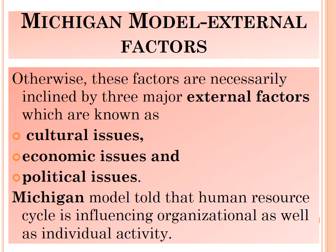The Michigan model is necessarily influenced by three major external factors: cultural issues, economic issues, and political issues. Any organization must be dependent on the culture, economy, and political issues of its context. The Michigan model states that the human resource cycle influences both organizational and individual activity.